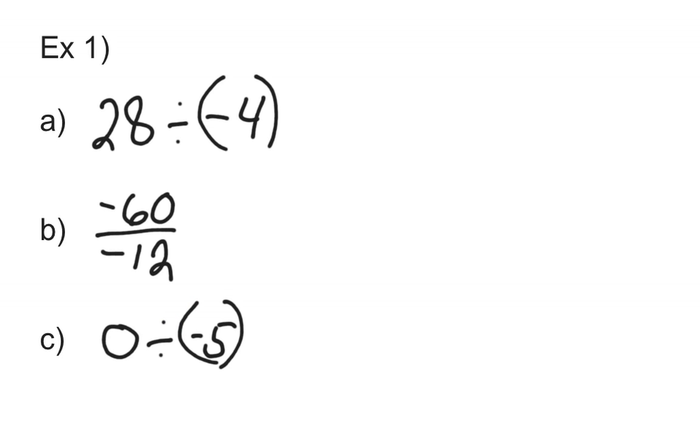Example 1. I got three of them here for you. I'm going to let you pause the video. Go ahead and try them on your own. Hopefully you're back. So, step number one is just to go ahead and divide these. 28 divided by 4 is 7. And then we're going to look. Well, this is a positive 28, it's a negative 4. The signs are different. And if the signs are different, that tells me I'm going to have a negative answer. Negative answer when the signs are different.